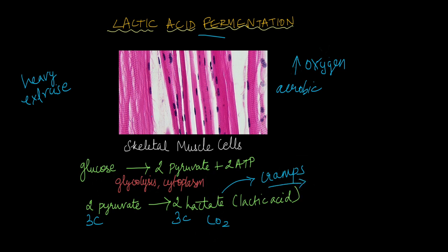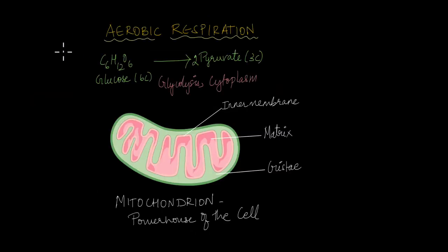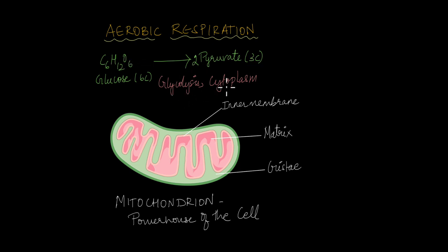Finally, let's talk about the aerobic mechanism of respiration. Aerobic respiration also begins with the conversion of glucose to two molecules of pyruvate, and this also occurs by the process of glycolysis in the cytoplasm.